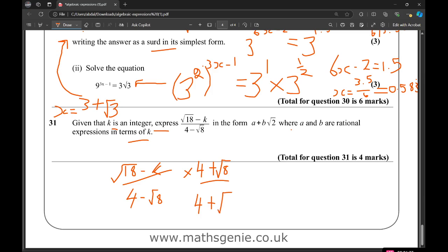Times top and bottom here by the conjugate, times by 4 plus root 8 over 4 plus root 8. So on the bottom, what are we going to have? Well, all I do is I just do 4 times 4 and then this times this. So 4 times 4 makes 16 and minus root 8 squared, so I'll have 16 minus 8. So it'll be over 8 on the bottom.